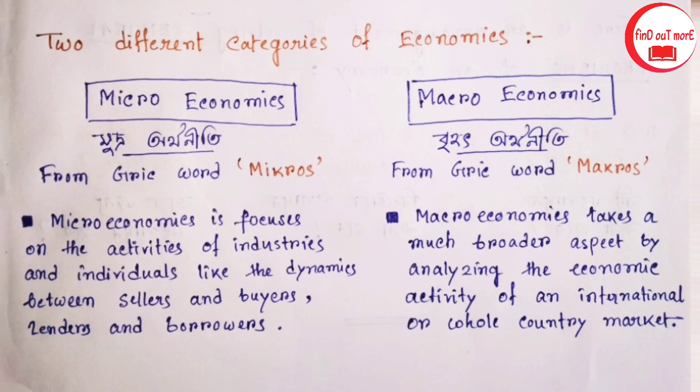Microeconomics deals with the study of industries and individuals, like the dynamics between sellers and buyers, lenders and borrowers. Microeconomics focuses on the individual — whether that is an individual industry or an individual person.